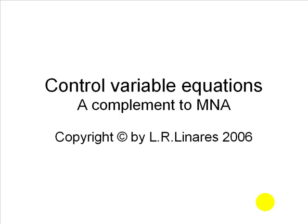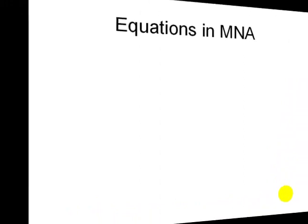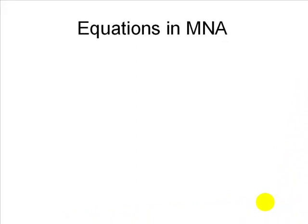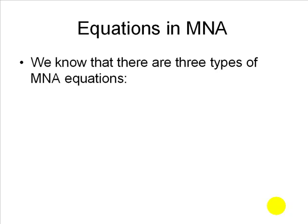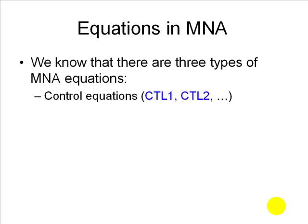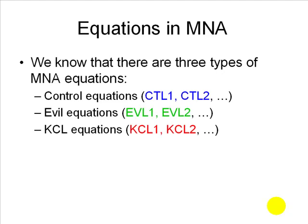We explore many different scenarios in which we have controlled sources or controlled variable equations. This is a complement to the other tutorials on MNA we've seen so far. The equations in MNA fall in one of three categories: the control equations CTL1, CTL2, etc.; the evil branch equations evil1, evil2, evil3, etc.; and the KCL equations KCL1, KCL2, and so on.